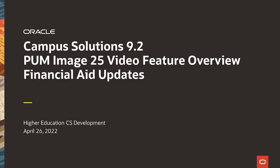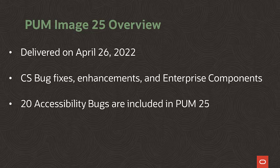Welcome to the Campus Solutions 9.2 PUM Image 25 Video Feature Overview for Financial Aid Updates. PUM Image 25 was delivered on April 26, 2022. Along with bug fixes, PI25 includes enhancements and enterprise component features. 20 Accessibility Bugs are included in PUM 25.